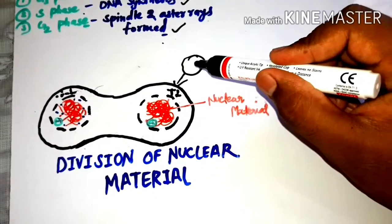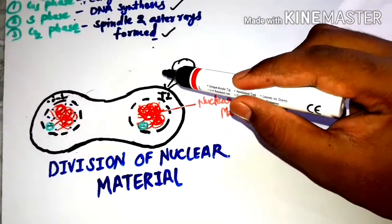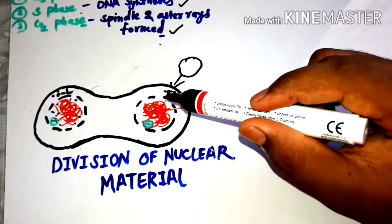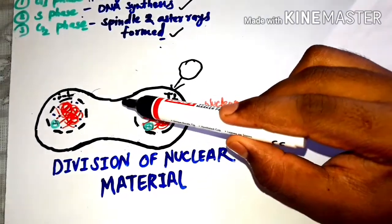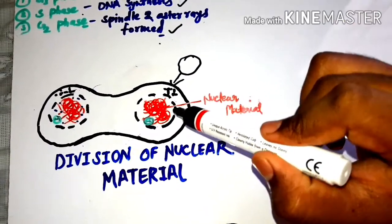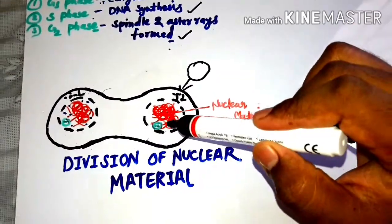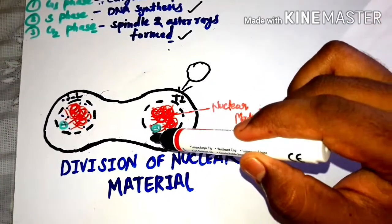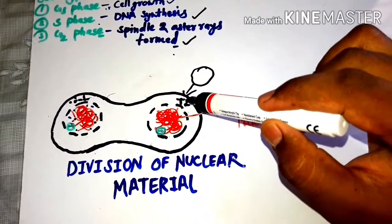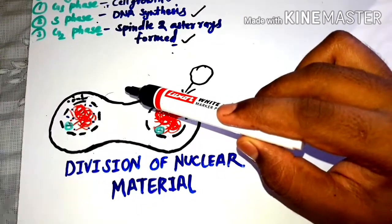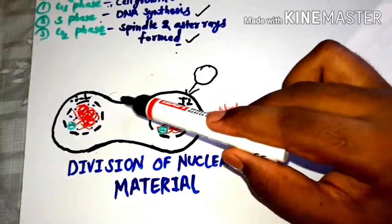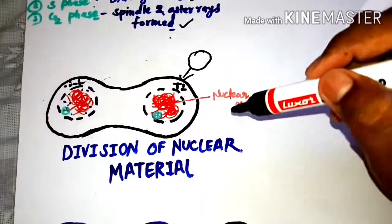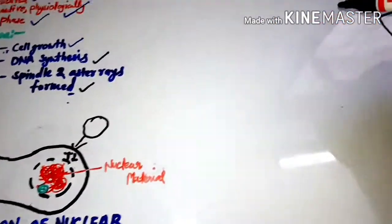Here is the nuclear material. It is dividing, starting to divide. Division of nuclear material takes place. This is one cell. When nuclear material or karyokinesis emphasizes, the constriction furrow is appearing. The nuclear material is divided and the nuclear membrane starts developing. Nucleolus is also present and the centrosomes are coming to both sides.